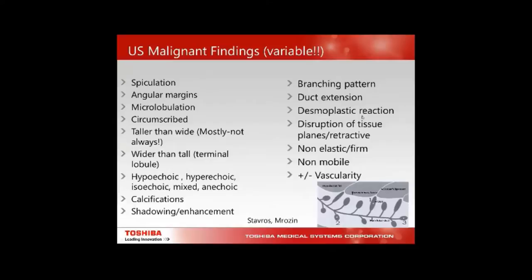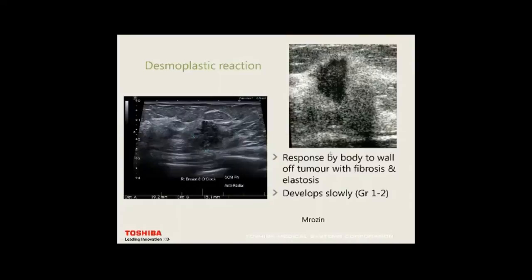The main thing is disruption through tissue planes — the cancer is retractive and pulls tissue with it. It's non-elastic and firm. Breast cancers tend not to be mobile. Ultrasound has the advantage of being dynamic and real-time, giving us advantages over MRI and mammography. We use low flow settings of 2 to 5 cm per second because the blood vessel branches in cancers are very small and compressible.